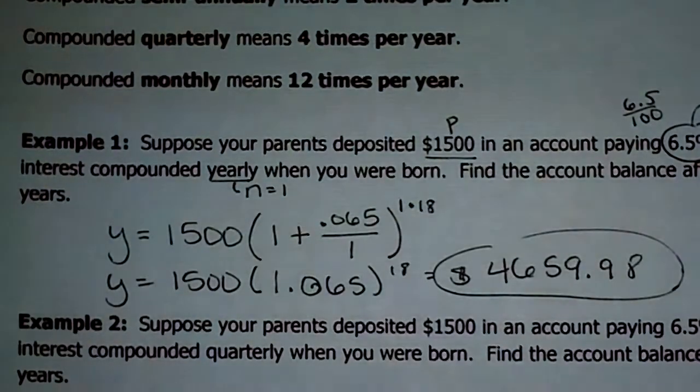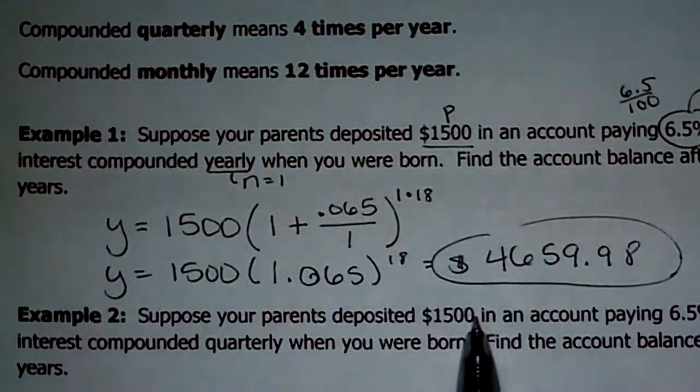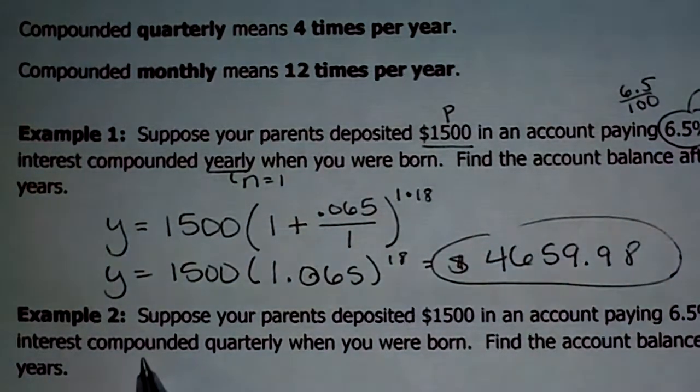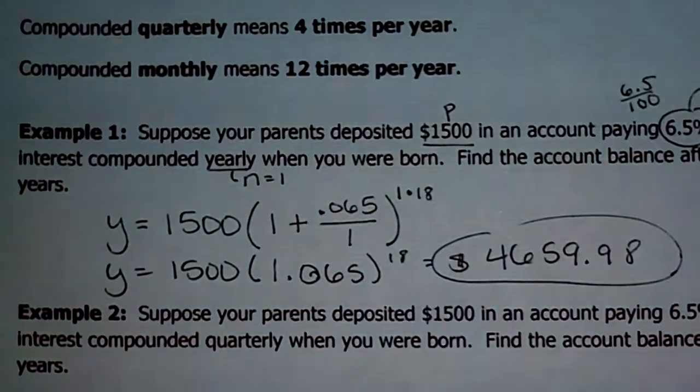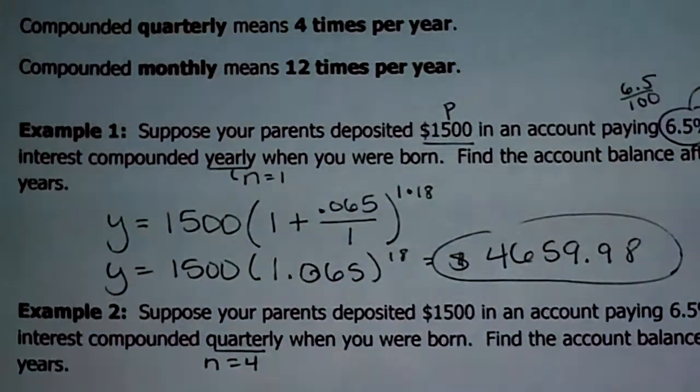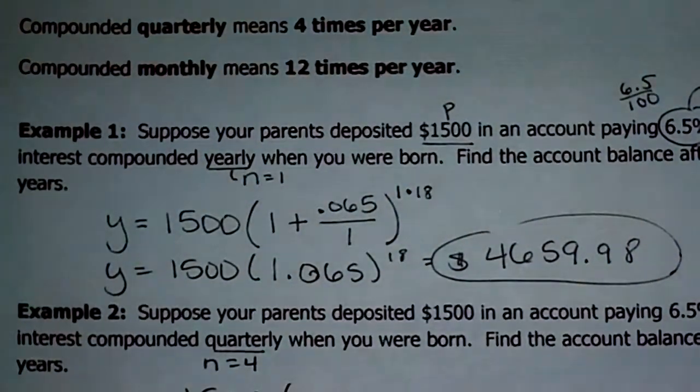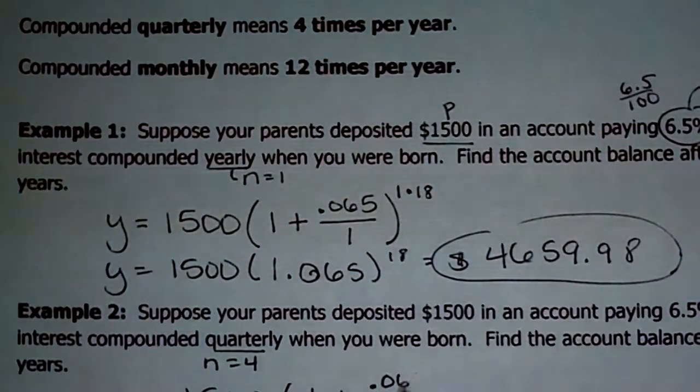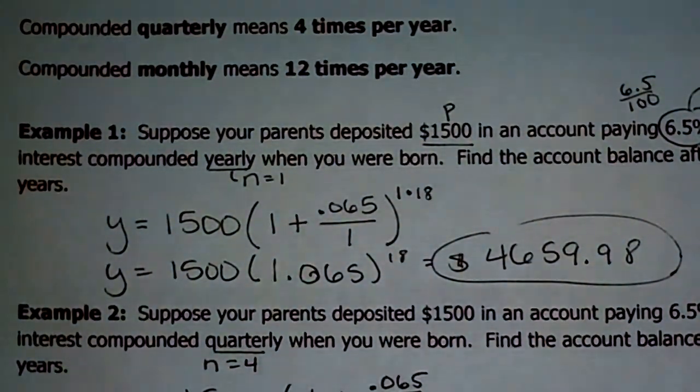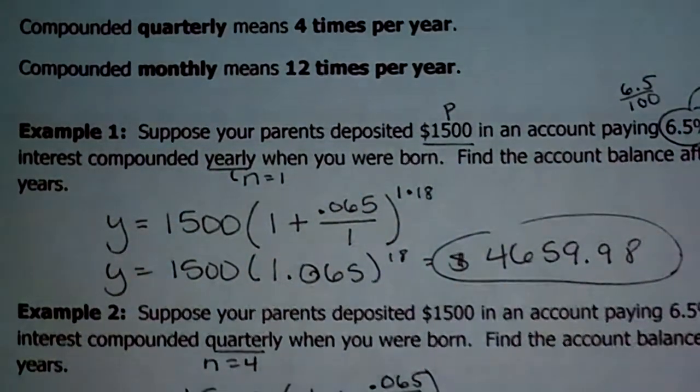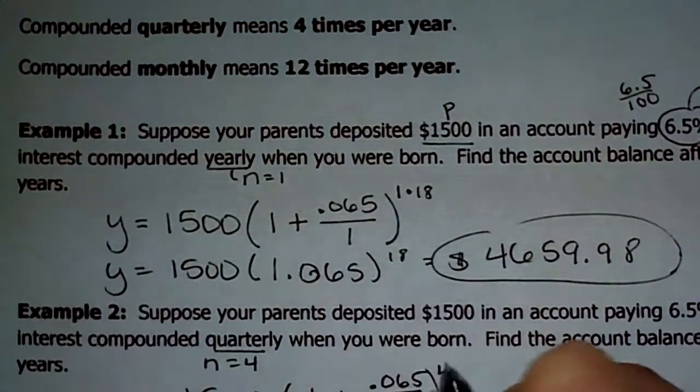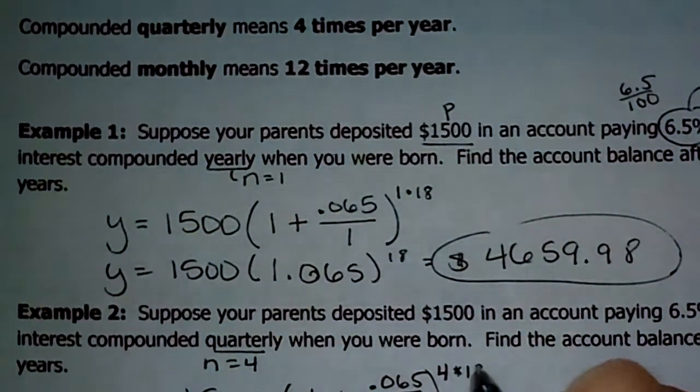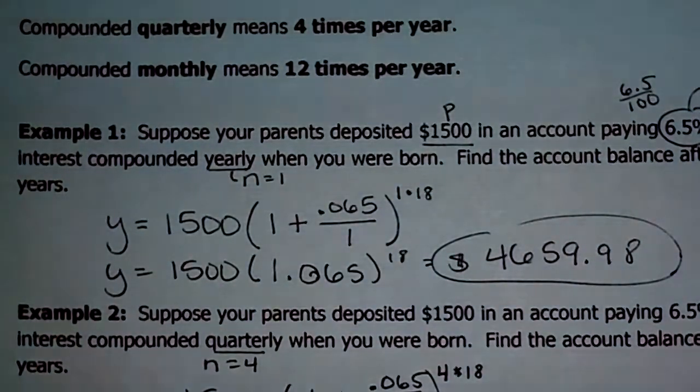All right. The next example, it's the same scenario. Your parents deposit $1,500. It pays 6.5%. This time, the interest is going to be compounded quarterly when you were born. So instead of compounded yearly, it's now compounded quarterly. And we said that quarterly means four times a year, so that means that N equals four. All the rest of these are going to be the same. So in your equation, our principle is still 1,500. I'm taking 1 plus 0.065 divided by the number of times it's compounded, which now it's four. And I'm supposed to raise that to the power of the number of times it's compounded times the amount of time. So that's a little bit different, right?